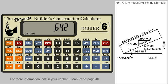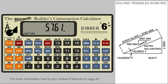So let's solve our triangle by entering our slope dimension of 5761 millimeters and putting this in the slope. To find the other two sides of our triangle, press the run and press the rise.